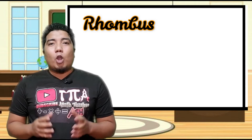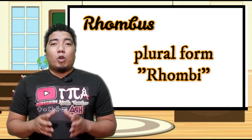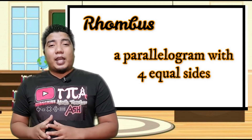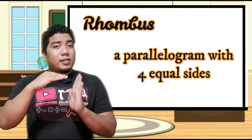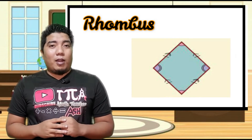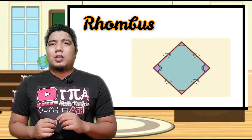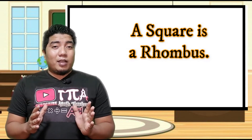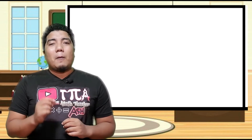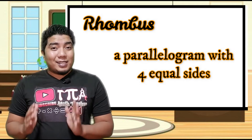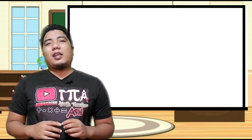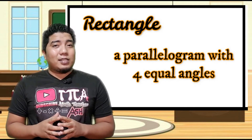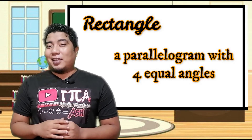How about rhombus? Rhombus — in plural form, rhombi — is a parallelogram in which all four sides are equal. Now, you might ask: isn't that the definition of a square? Remember, a square is a rhombus because by definition of rhombus it has equal sides. At the same time, a square is also a rectangle because a square has equal angles, which is also the definition of a rectangle.